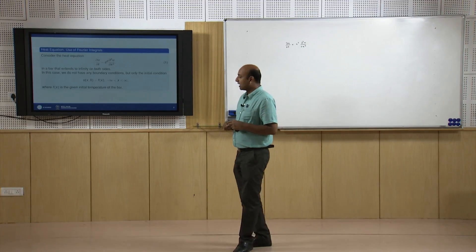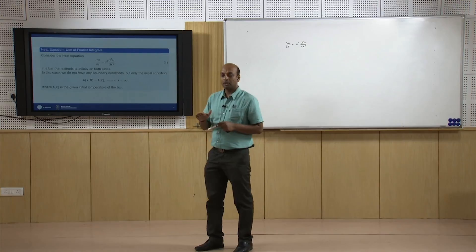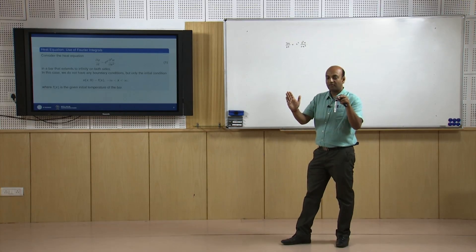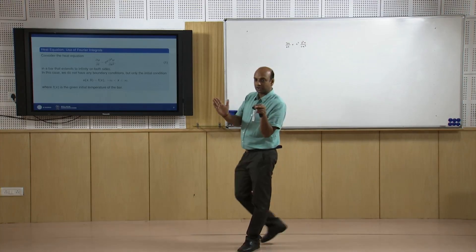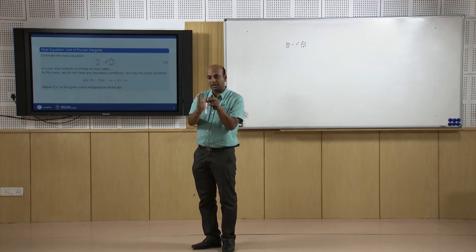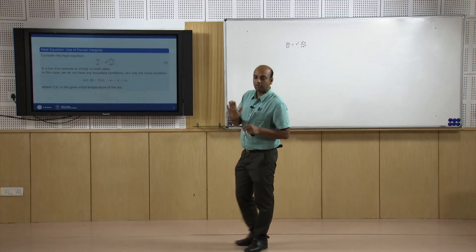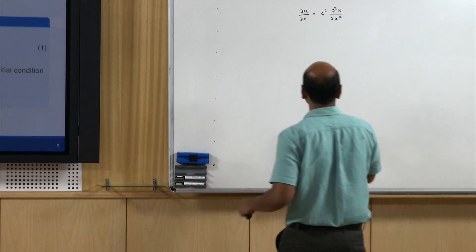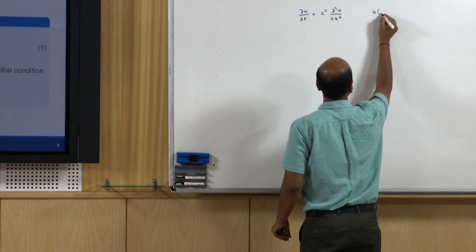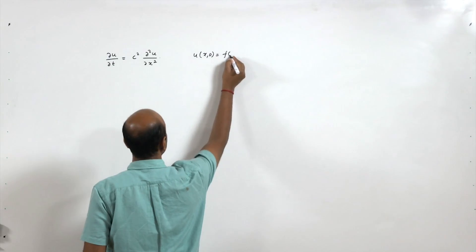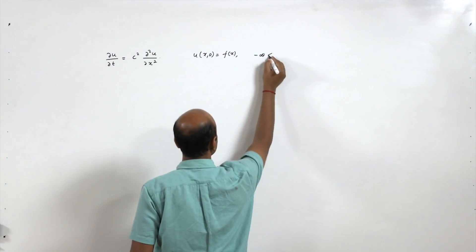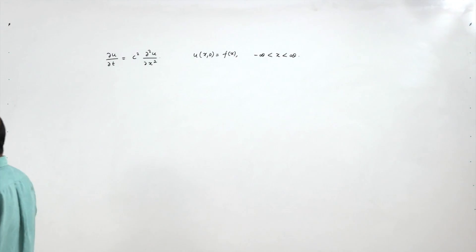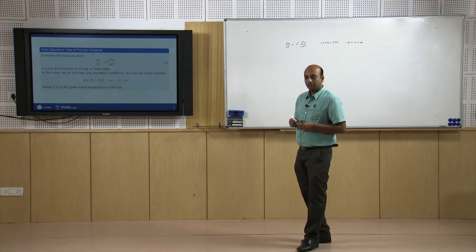In this case we do not have any boundary conditions like we have for a finite bar when x goes from 0 to l. But when the bar tends to infinity from both sides, we do not have any boundary conditions. However, we have the initial condition given by u(x,0) = f(x), with x varying from minus infinity to plus infinity.